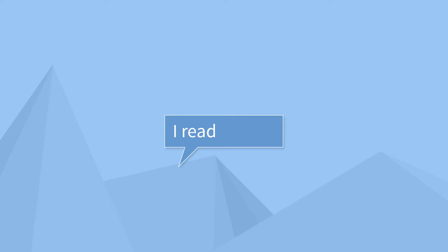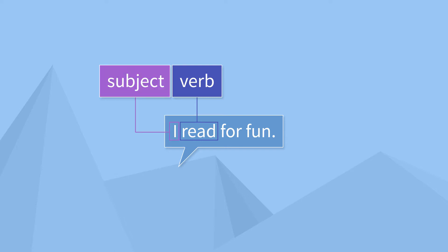Sentence number one is 'I read for fun.' First, we look for the verb in the sentence, and it should be immediately clear that it's 'read.' Then we simply look for who's doing the reading, and of course it's 'I.' So the verb is 'read' and the subject is 'I.'